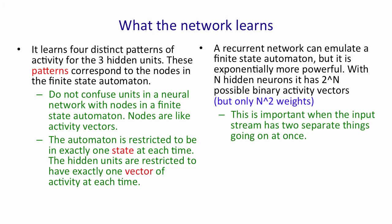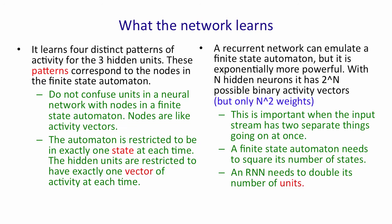This is important when the input stream has two separate things going on at once. A finite state automaton needs to square its number of states in order to deal with the fact that there are two things going on at once. A recurrent neural network only needs to double its number of hidden units. By doubling the number of units, it does, of course, square the number of binary vector states that it has.